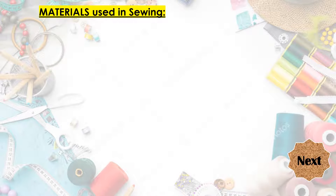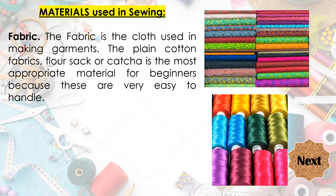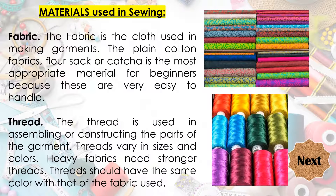These are the materials used in sewing. The first one is the fabric — it is the cloth used in making garments. Plain cotton fabrics, flower sock or katcha, are the most appropriate material for beginners because they are very easy to handle and very affordable. The next material is the thread, used in assembling or constructing the parts of the garment. Threads vary in sizes and colors. Heavy fabrics need stronger threads. Threads should have the same color as the fabric used.